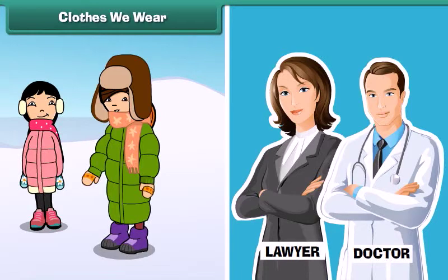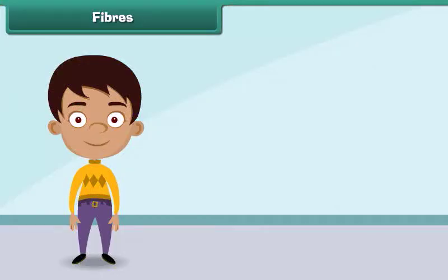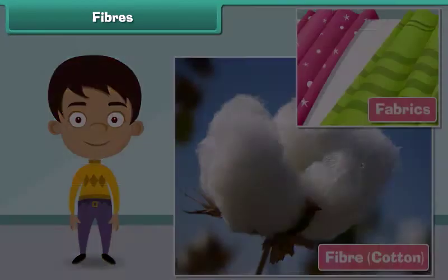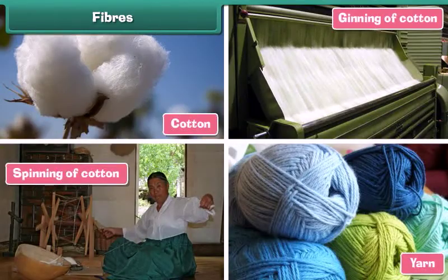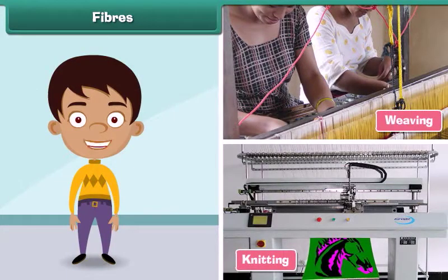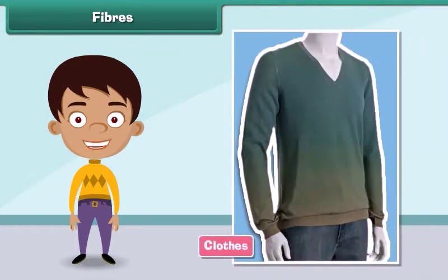Fibers are the raw material used in manufacturing clothes. Fibers are transformed into clothes through a series of steps. First, raw fibers are twisted together to form long strands of threads known as yarns. The yarns are then woven and knitted to form fabrics. Finally, fabrics are used to make clothes of different sizes and shapes to suit the needs of the people.